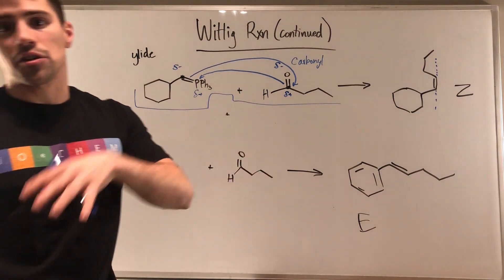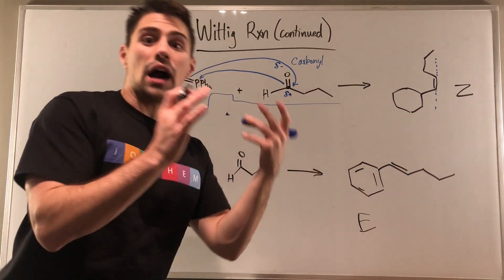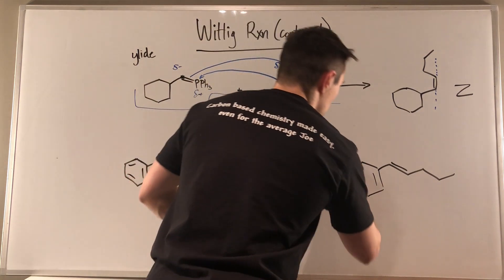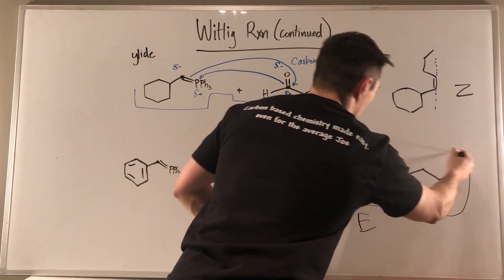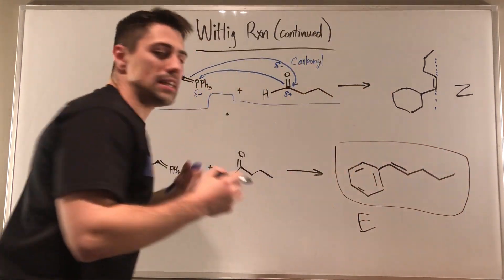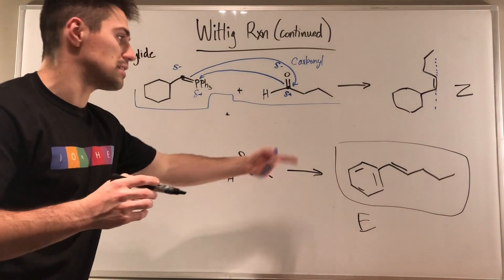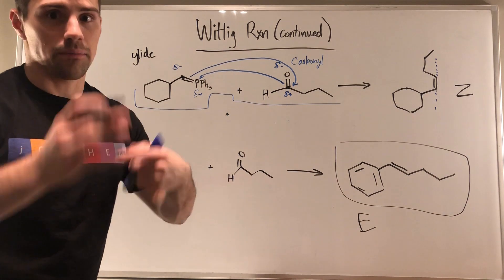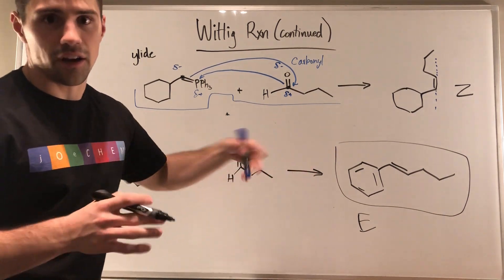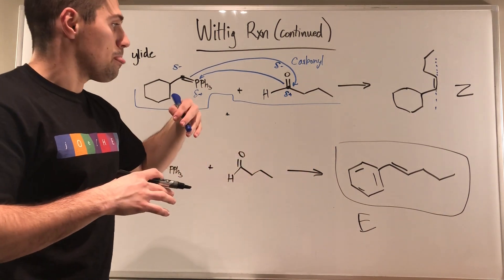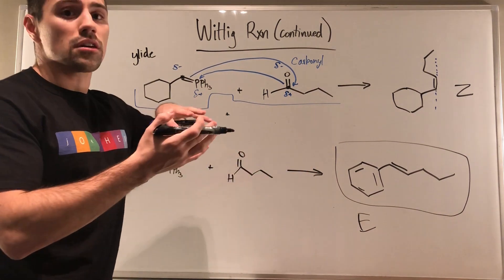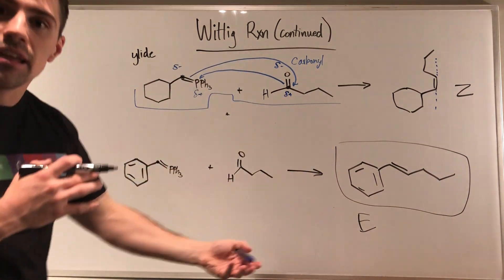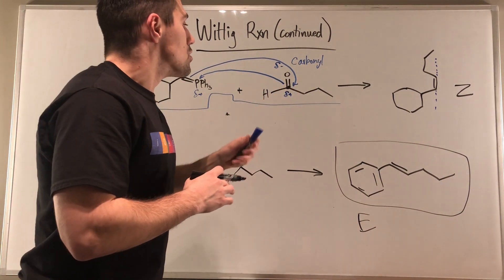And based on our previous knowledge of alkenes, this is trans double bonds. You see them more in nature — trans, E. Not the same, but in this situation they are. They're more prevalent in nature because they're more stable than Z.